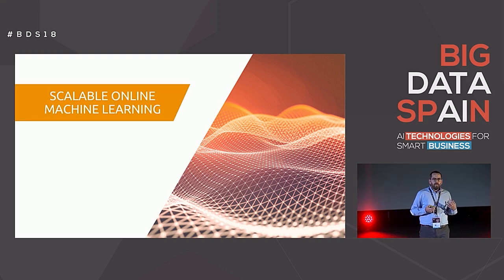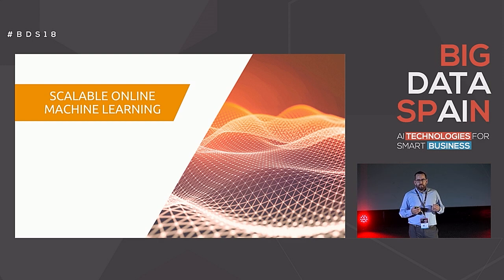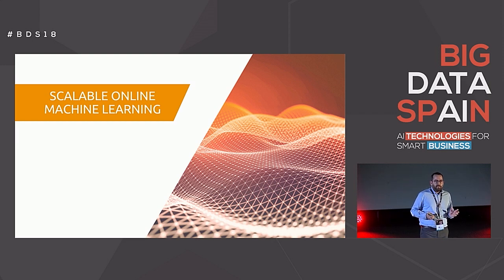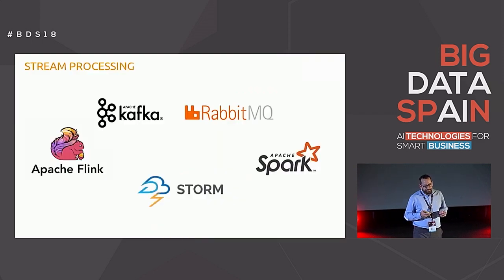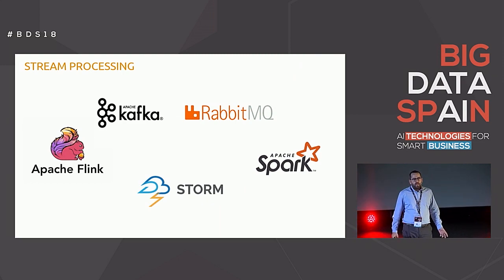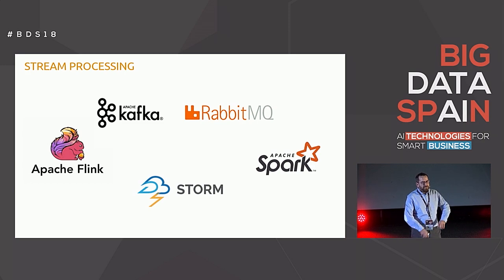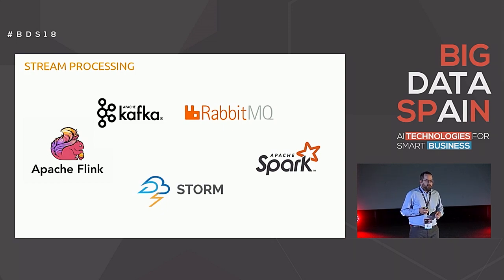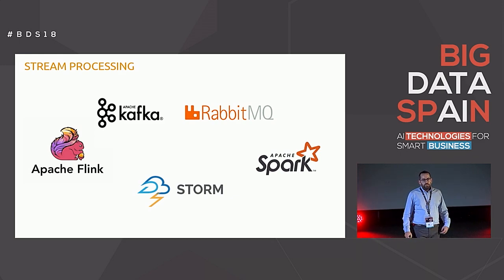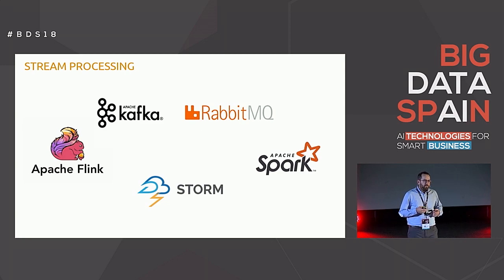What is Scalable Online Machine Learning? The main idea is the convergence of two important trends. First, stream processing, which is very interesting now, and its integration with machine learning, which is the main solution for most data analytics problems. Regarding stream processing, we have a great set of tools: frameworks like Flink, Storm, and Spark to implement applications, and solutions like Kafka and RabbitMQ to integrate different components.